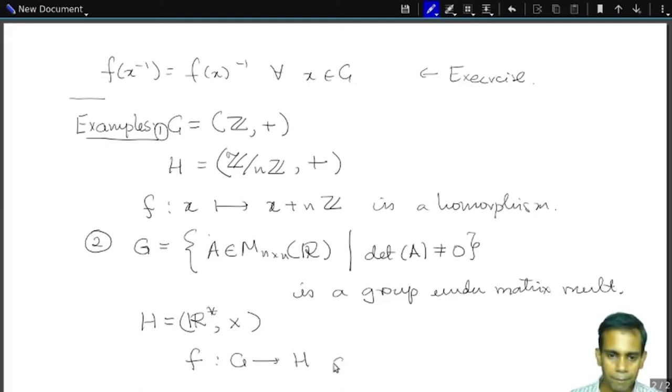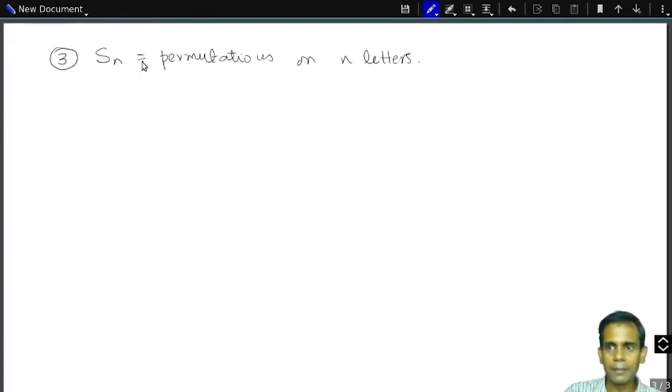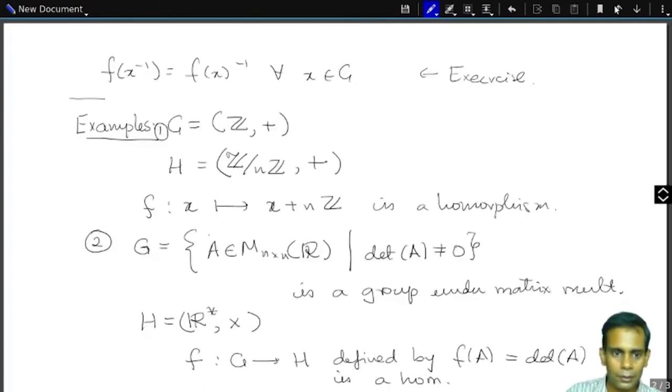And you take H to be the group of non-zero real numbers under multiplication. Then F G to H defined by F of A equals determinant of A is a homomorphism of groups. Now let's look at a slightly more interesting example.